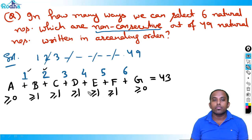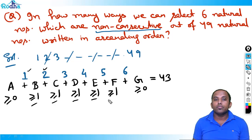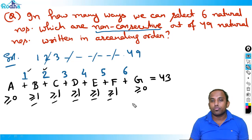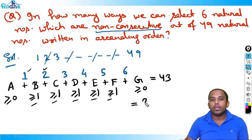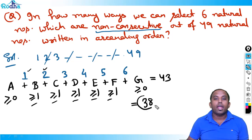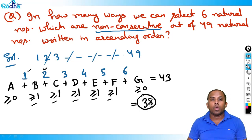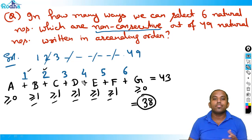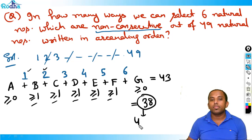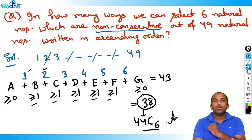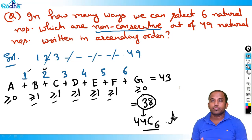Now find the integral solutions. Five middle variables each need at least 1, so give 5 ones: 5×1 = 5, leaving 43 − 5 = 38. With 7 variables there are 6 plus signs. So the answer is 38 + 6 = 44C6.